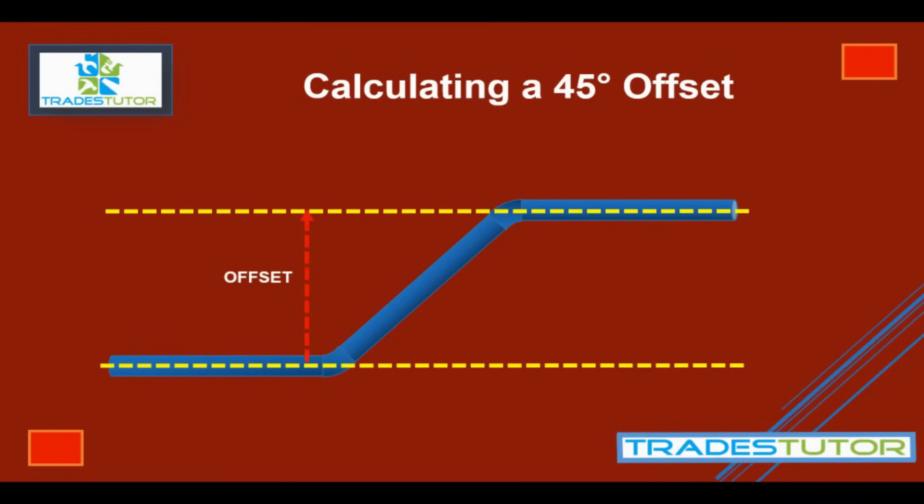Now we'll draw a couple more yellow lines here. We'll draw one up there. That's where the offset starts. That's where the offset ends. Now that distance is referred to as the advance. So we have the offset and the advance, and then the piece of pipe that joins the two pieces of pipe. That is called your travel.